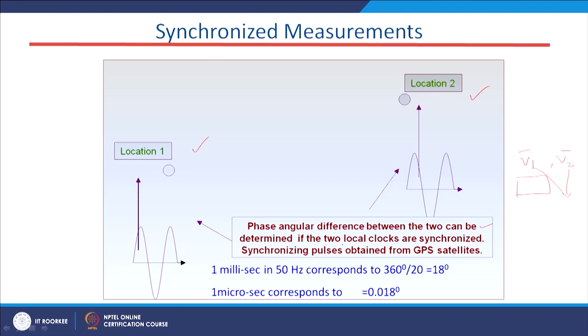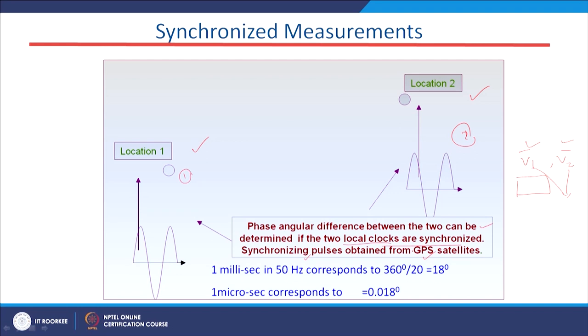This synchronization work is done in WORMS technology using the PMU device. The angular difference between two locations can be determined only if the two local clocks are synchronized. Each location has one local clock, and if these two clocks are synchronized, the two phasors can be compared — this is the meaning of synchronized measurements. The synchronizing pulses are obtained from the GPS satellite.